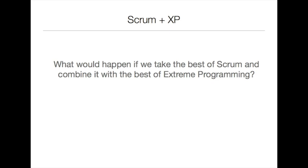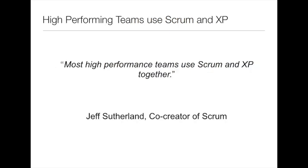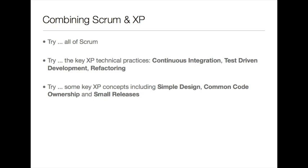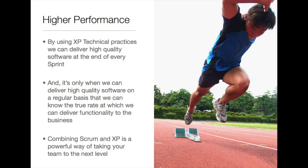Despite the differences, there is a natural attraction between the two. Most high-performing teams naturally use both Scrum and extreme programming together. An example of this is extreme programming's practice of continuous integration. Without continuous integration, it quickly becomes impossible to produce an increment of potentially shippable product at the end of every single sprint. Scrum doesn't explicitly mandate how a team should build the product, but it will drive the team towards adopting the extreme programming technical practices after just a few sprints. Combining Scrum and extreme programming is a powerful way to take teams to the next level.